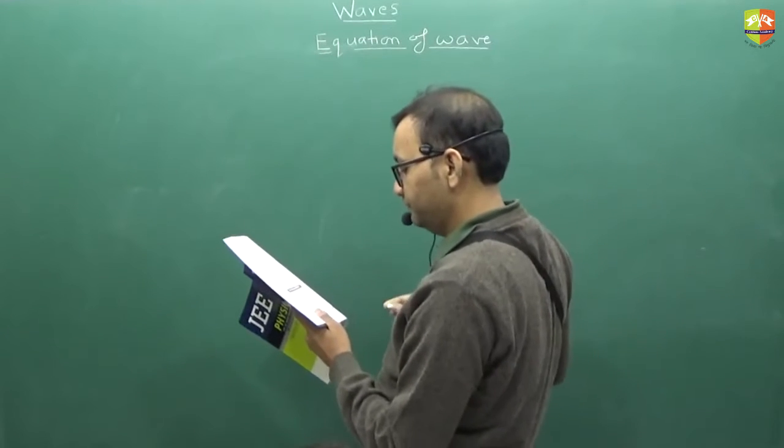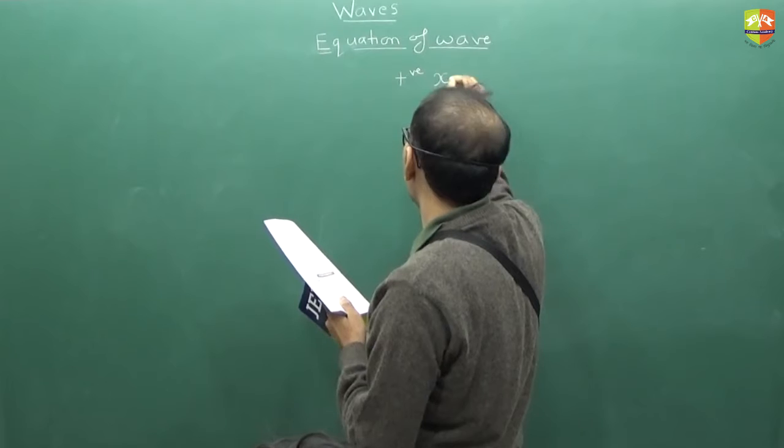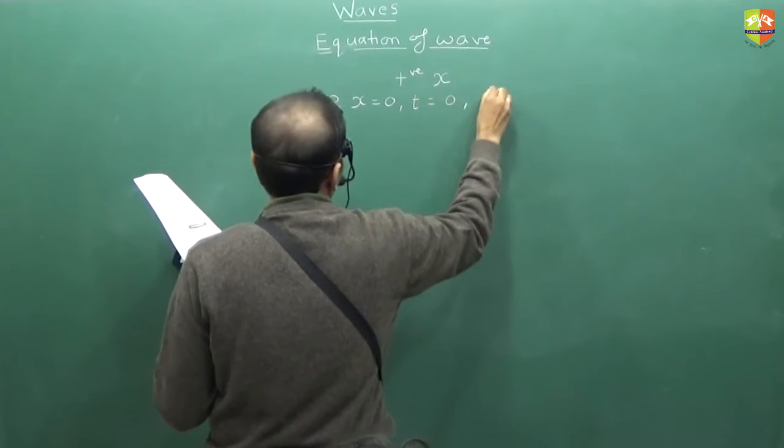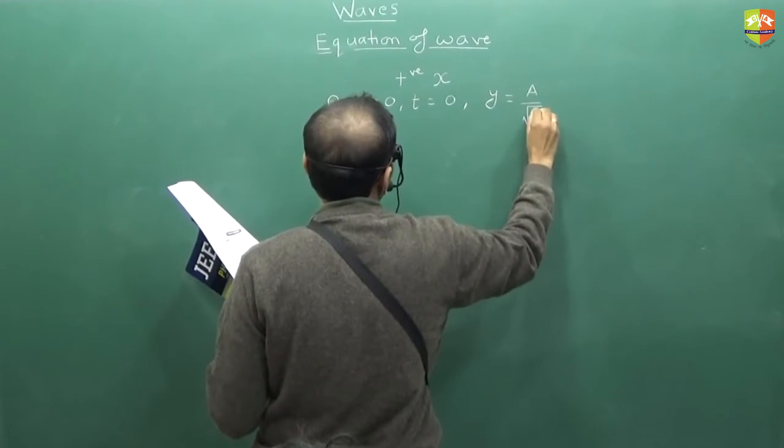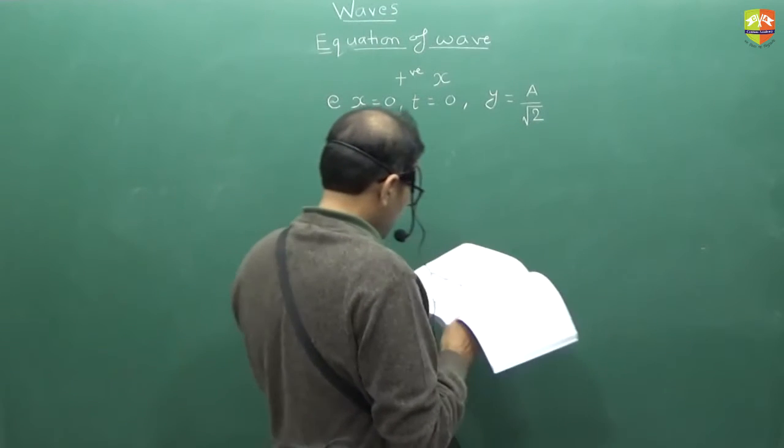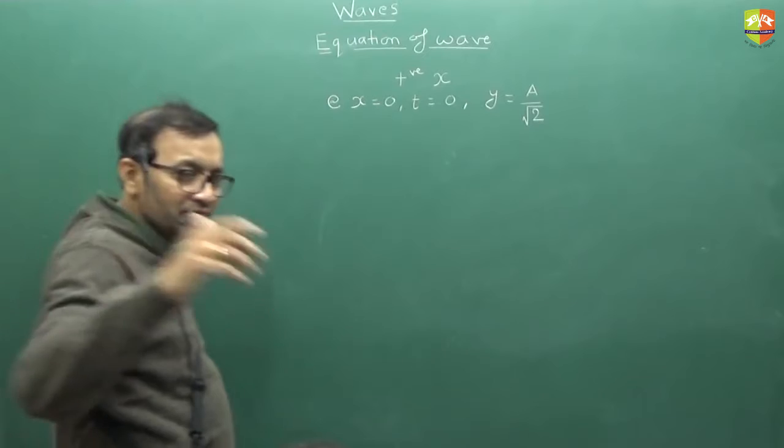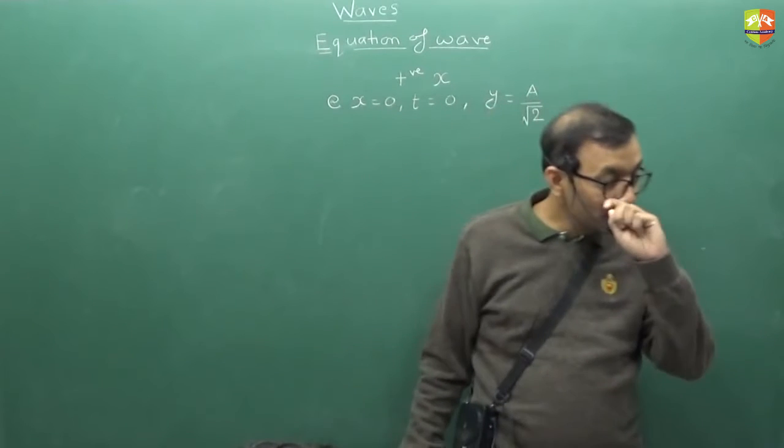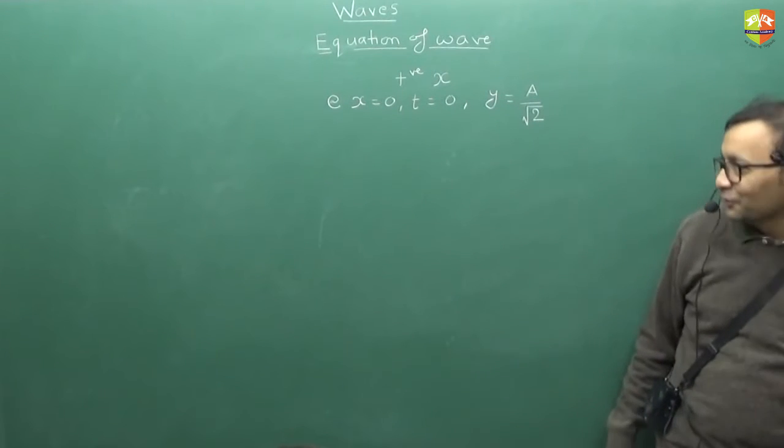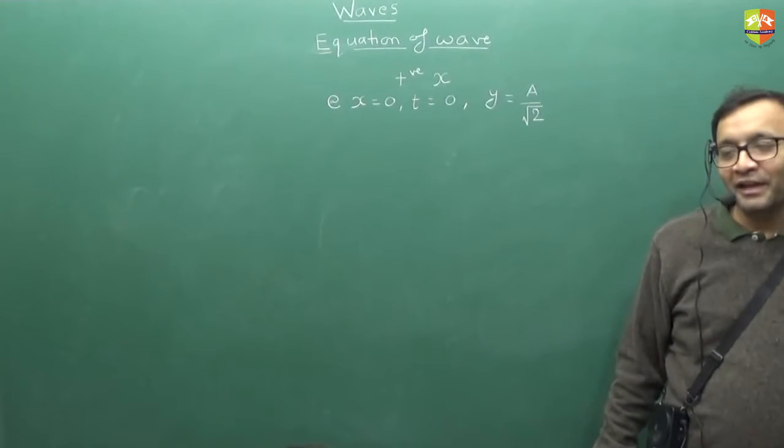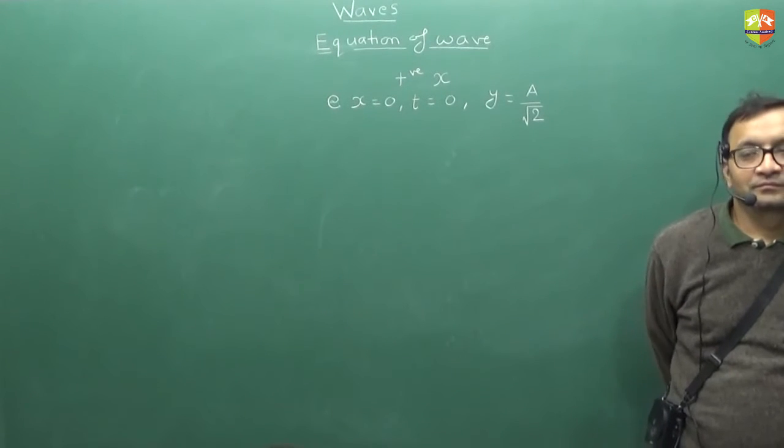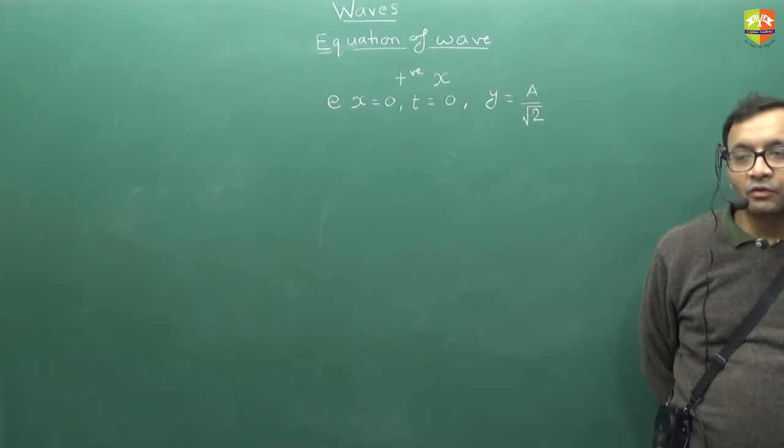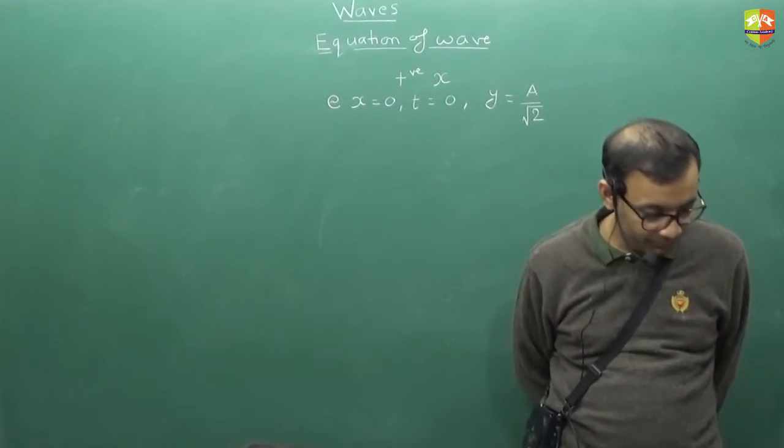Find out the equation of wave moving in positive x direction. At x equal to 0 and t equal to 0, the value of y is a by root 2. a is the amplitude. You can assume omega and k to be present. So value of phi is? Pi by 4 or 3 pi by 4. So y is equal to a sin of kx minus omega t plus pi by 4.